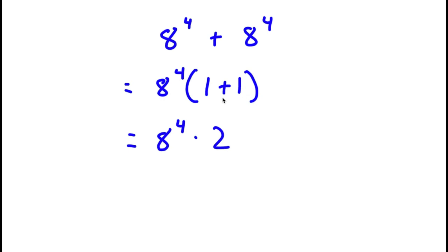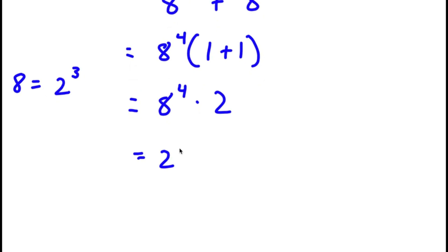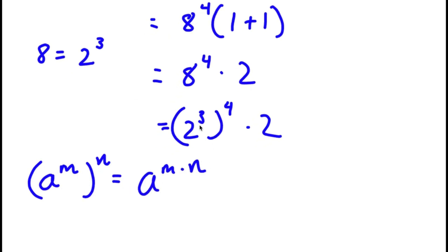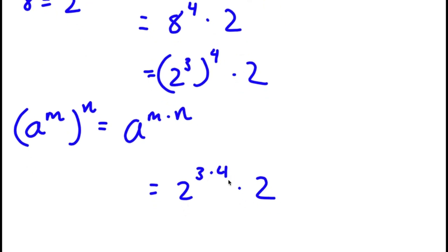Now 8 is the same thing as 2 to the power of 3. So if I replace 8 with 2 to the power of 3, I get 2 to the power of 3 to the power of 4 times 2. And if I have something in the form a to the power of m to the power of n, this is equal to a to the power of m times n. So 2 to the power of 3 to the power of 4 equals 2 to the power of 3 times 4. And 3 times 4 is simply equal to 12.